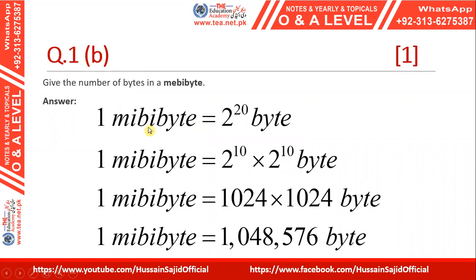Part b asks for the number of bytes in a mebibyte. One mebibyte is equal to 2 raised to the power 20 bytes. We can split this as 2 raised to the power 10 multiplied by 2 raised to the power 10, which is 1024 multiplied by 1024, giving us 1,048,576 bytes.